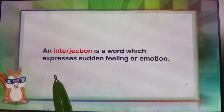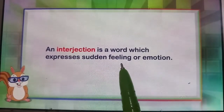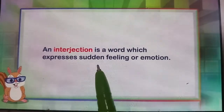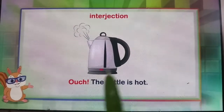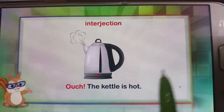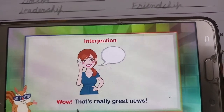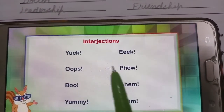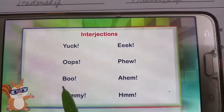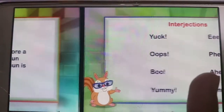Next is interjection. An interjection is a word which expresses sudden feeling or emotion. For example: ouch, the kettle is hot; wow, that's really great news. Some interjections are: ya, oops, yo, boo, em, yummy, hmmm. These are some interjections.